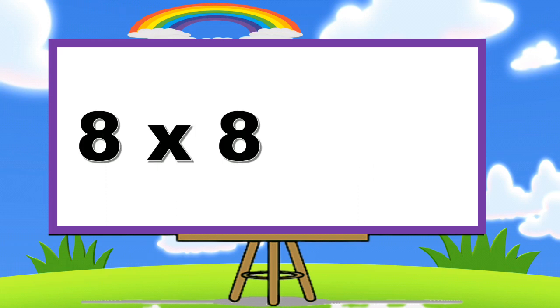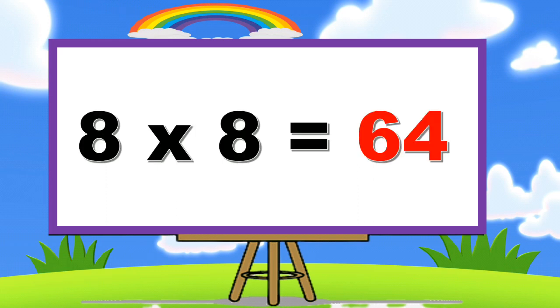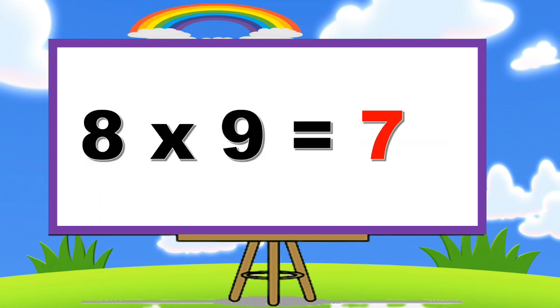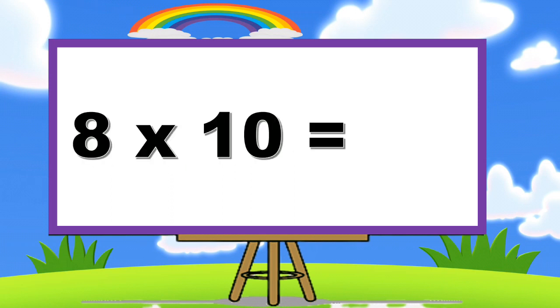Eight eights are sixty-four. Eight eights are sixty-four. Eight nines are seventy-two. Eight nines are seventy-two. Eight tens are eighty.